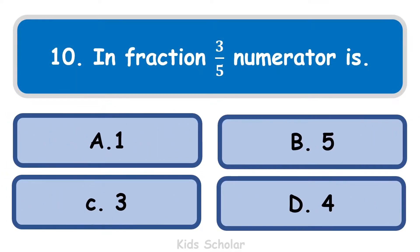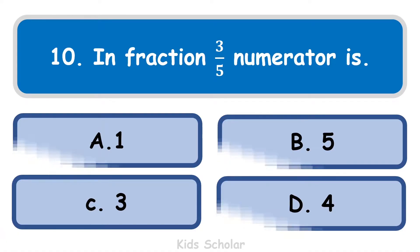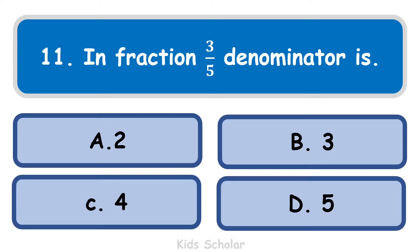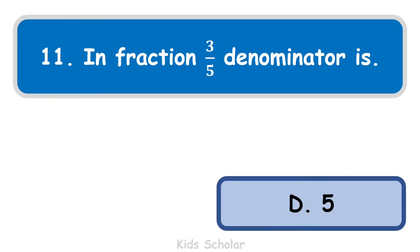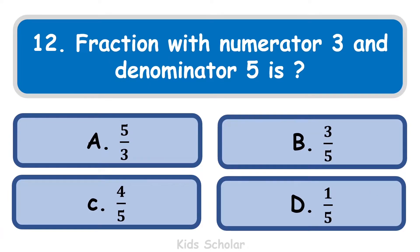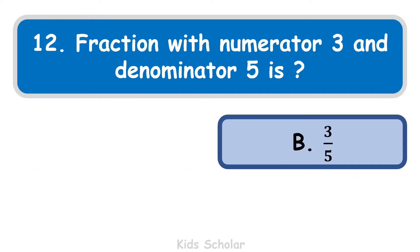Next question is: in the fraction 3 by 5, what is the numerator? The numerator is 3. Next question: in the fraction 3 by 5, what is the denominator? The denominator is 5. Next question: write the fraction with numerator 3 and denominator 5. The options are 5 by 3, 3 by 5, 4 by 5, and 1 by 5. The correct answer is B, that is 3 by 5.